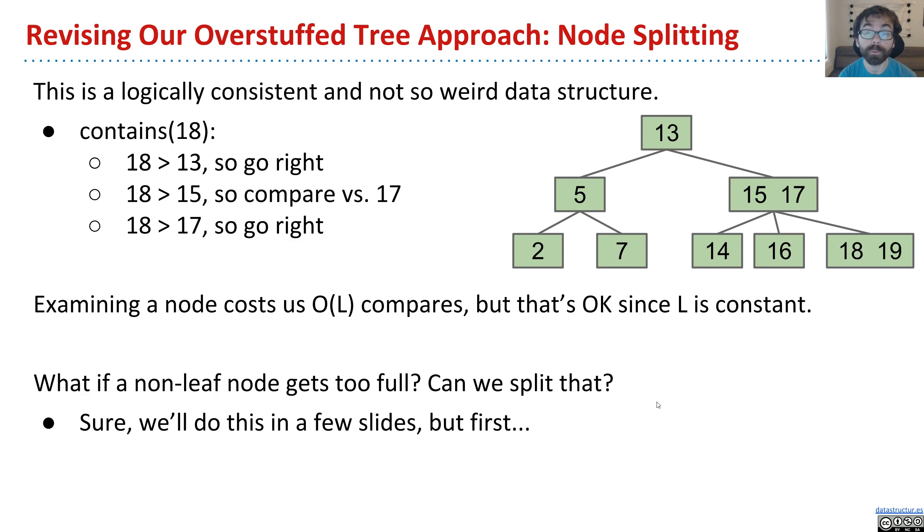Now this is also a logically consistent data structure, but unlike the overstuffed tree, it is not so weird. So if we want to look for something, let's say, where's 18? We say, hey, 18, are you 13? Nope. OK, well, are you bigger? Yes, go right.